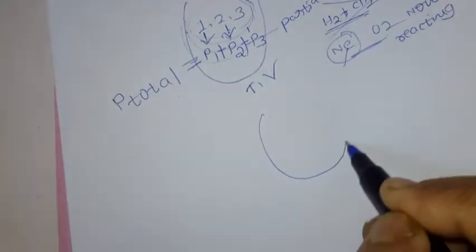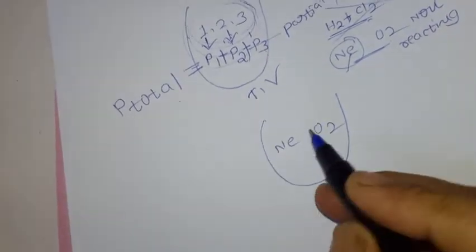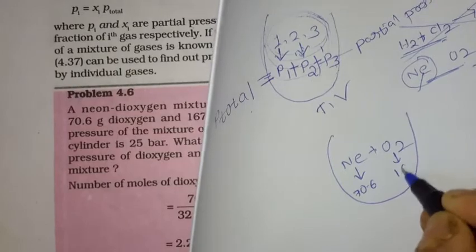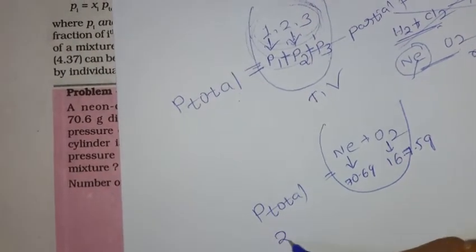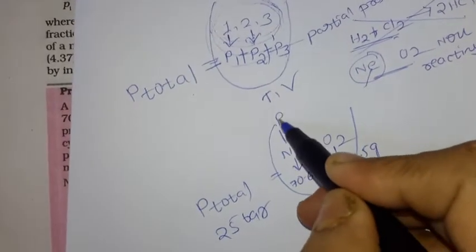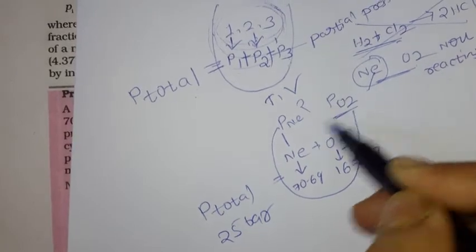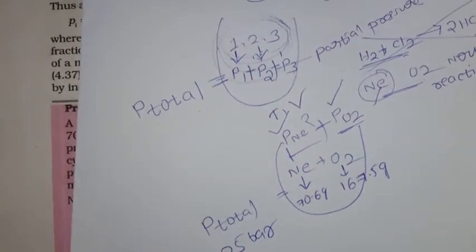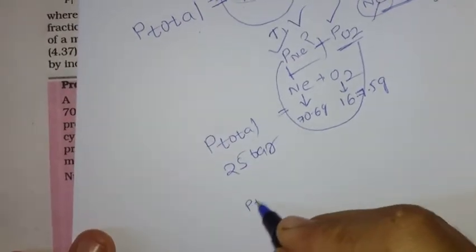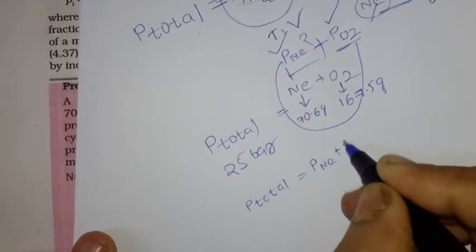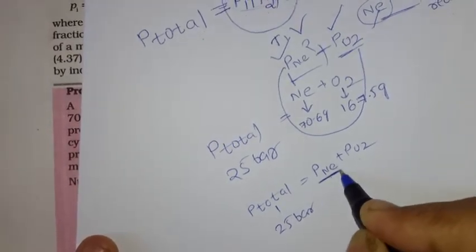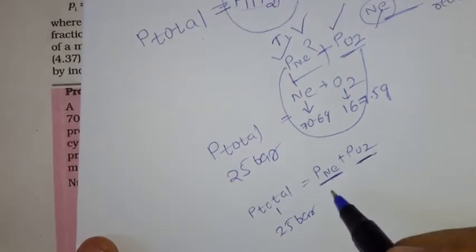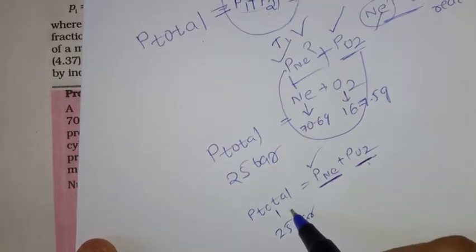We have one cylinder containing Neon and Dioxygen. Mass of Oxygen = 70.6 grams, mass of Neon = 167.5 grams, P_total = 25 bar. They are asking for the partial pressure of Neon and partial pressure of Oxygen. We know P_total = partial pressure of Neon + partial pressure of Oxygen. We don't know either partial pressure individually, so we need to find one first.